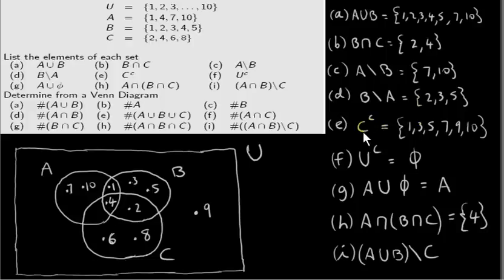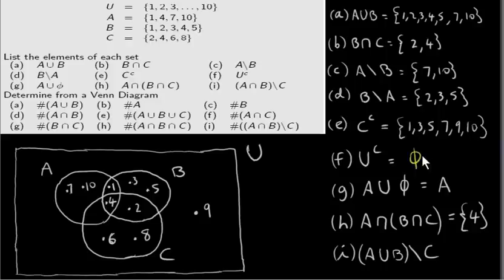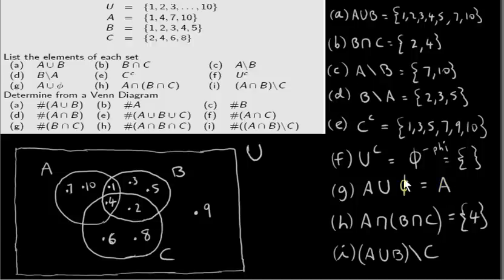C complement is the set of elements outside of set C. So the elements outside of set C are one, three, five, seven, ten, and nine. U complement is the set of elements that are outside the universal set. Well, the universal set is supposed to hold everything we're talking about, so what's outside of it contains no elements — that's the empty set, denoted by the Greek letter phi, or written as empty curly brackets. If we take any set and unite it with the empty set, we just get that set. So A union with phi is A.